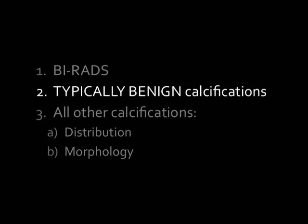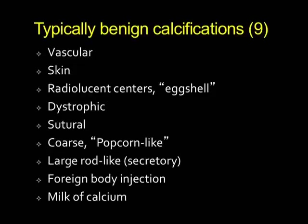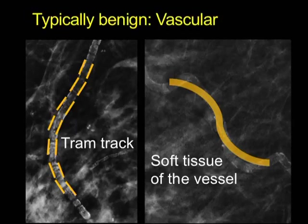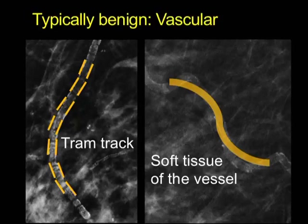Moving on to typically benign calcifications — there are nine categories, which seems like a lot, but you know many of these. The first category is vascular calcifications. They're not always obvious, and you need to distinguish these from the linear calcifications that you would otherwise biopsy. Two things help: the tram track appearance of the calcification and the soft tissue wall of the vessel, which should track with the calcifications on all views.